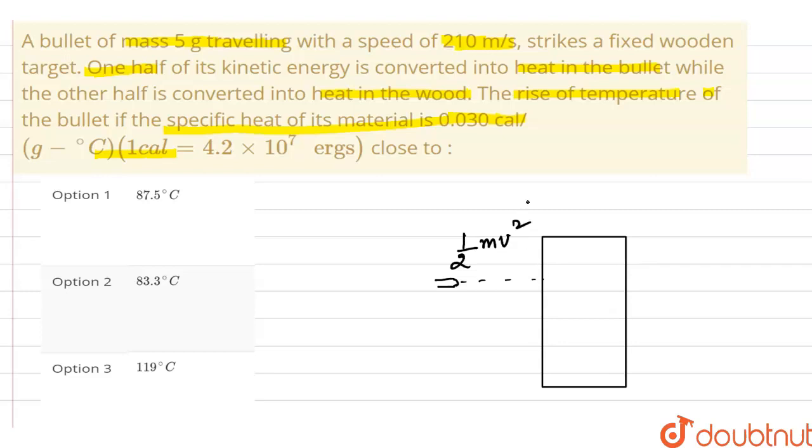this kinetic energy gets converted two ways. So half of the kinetic energy, half of E is going to increase the temperature of wood and half of this kinetic energy is going to increase the temperature of the bullet.